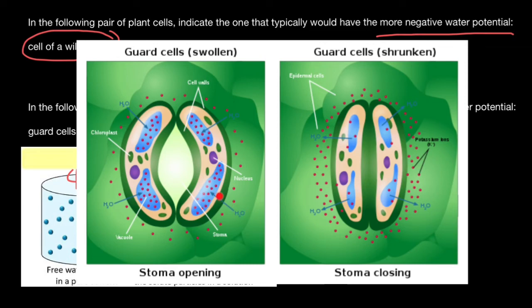And that means that water also is going to flow here. And turgidity of the cells is going to increase. And they would make an opening here.